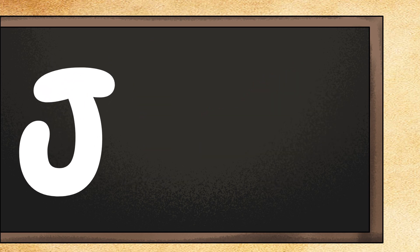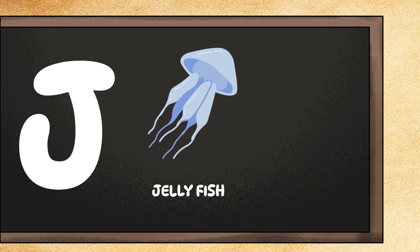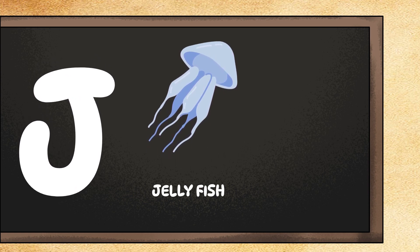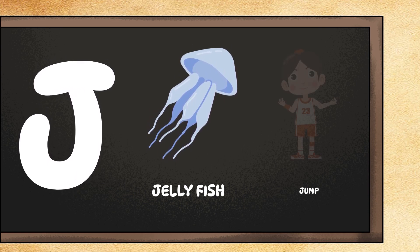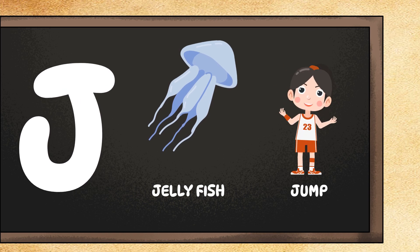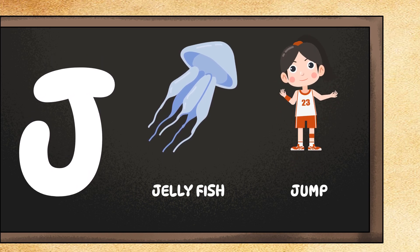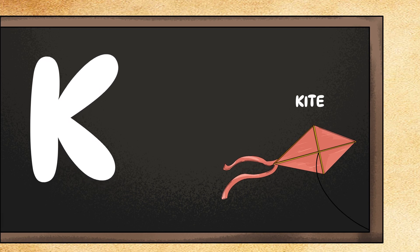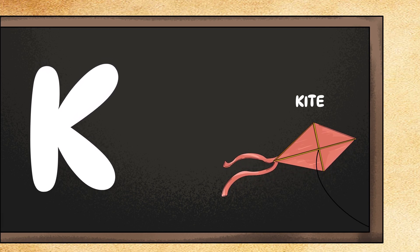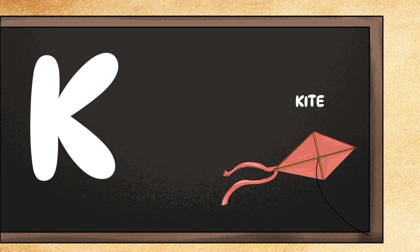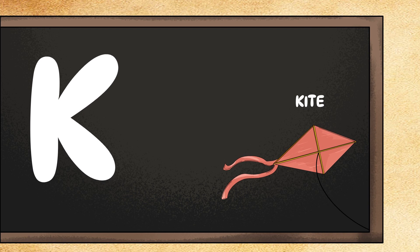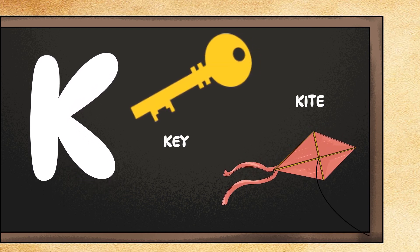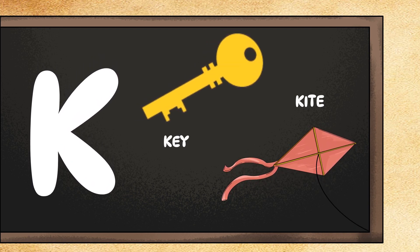J is for jellyfish. Can you wiggle your fingers like a floating jellyfish? Awesome! J is also for jump. Can you jump up and down? Boing! K is for kite. Can you pretend to fly a kite in the sky? Up, up, and away. K is also for key. Can you turn an imaginary key? Click.